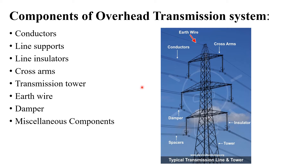The major components of an overhead transmission system are: conductors, line supports, line insulators, cross arms, transmission tower, earth wire, damper windings, and other miscellaneous components. We will discuss each component in detail.